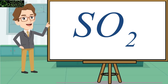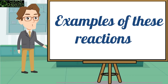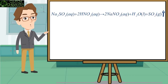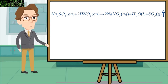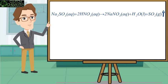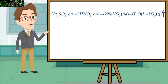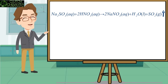Students, we have seen the general reaction. Now let's see the specific reactions. For example, the first example: Sodium Sulphite in aqueous medium reacts with nitric acid. So we get sodium nitrate plus water plus sulfur dioxide, just as we have seen in the general reaction.